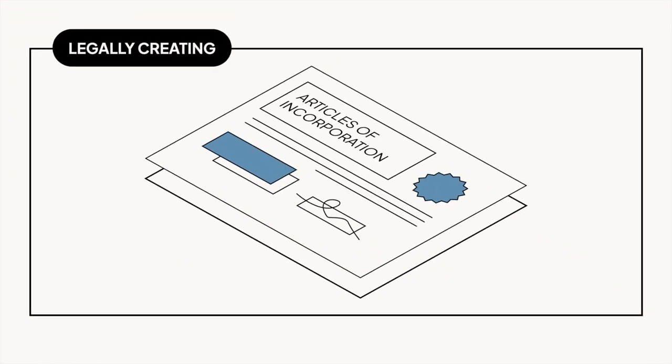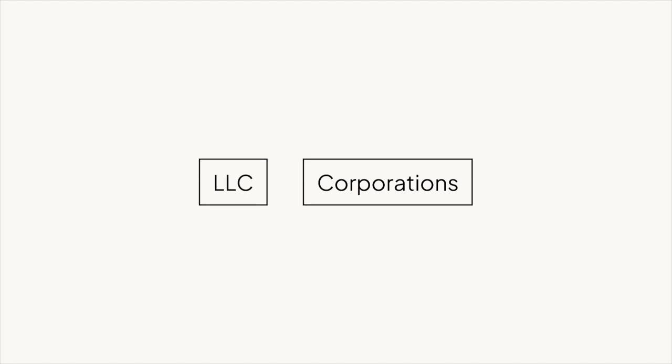Legally creating your company means filing an official document with your secretary of state called the Articles of Incorporation, if you're forming a corporation. There's a slightly different process for forming an LLC, but in this series we're going to be focusing on corporations. In the Articles of Incorporation, you're required to declare how many shares of your company you're creating — most companies create somewhere around 10 million shares. Depending on the state you're filing in, you may also be asked to declare a par value, or the nominal value of your shares. Most companies put some tiny number here, like $0.00001 per share. Don't worry about that right now — that's for lawyers and the IRS. What you need to care about is your valuation, which we'll teach you about at a later date.